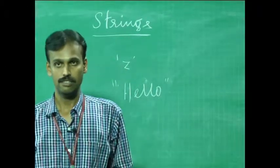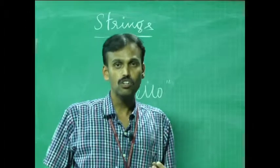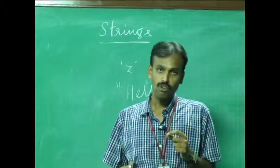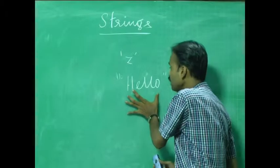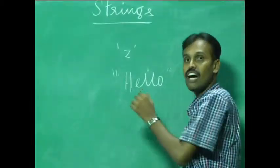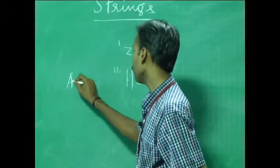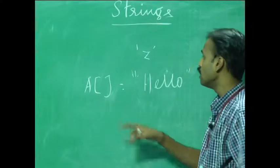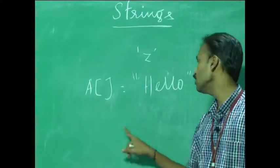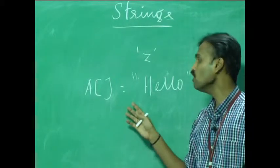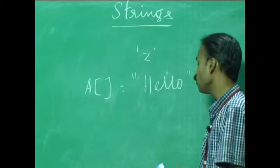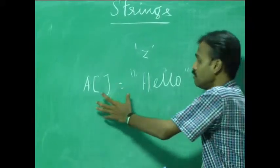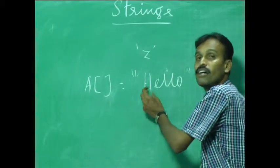Strings are arrays of characters. A string is a pointer towards the first character in the entire list. The value of a string is the address of its first character. For example, treating an entire set of characters as a string, a variable 'a' is termed as a pointer that points to the first character of the string. So 'a' is a pointer or a string that points to the first character, and the value of this entire string is the address of the first character. Each character in the string has its own address.